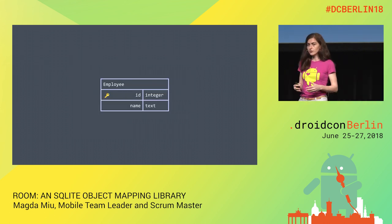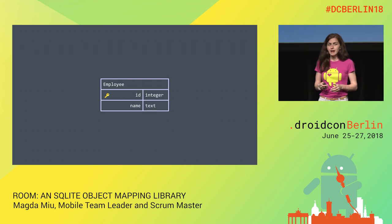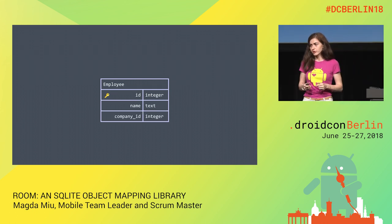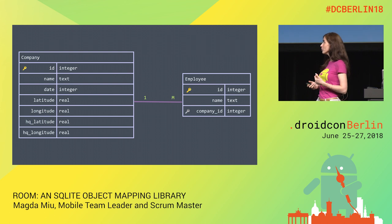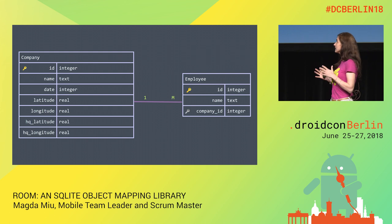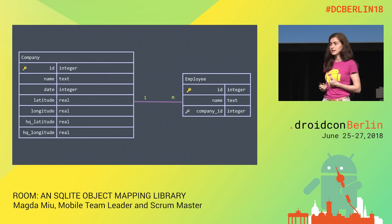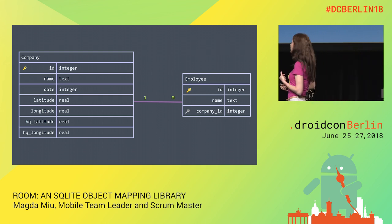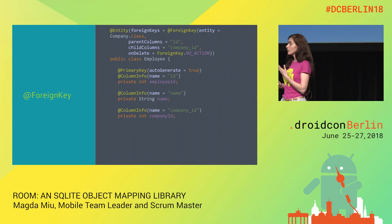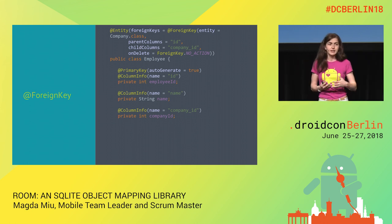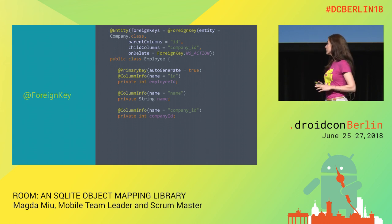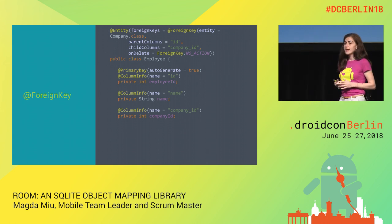Our company also has employees, which is a classic foreign key scenario. Room supports this. We have a one-to-many relation: the company ID, the primary key of the company table, becomes the foreign key of the employee table. We use the @ForeignKey annotation on the entity that contains the foreign key, specifying the parent entity, parent columns, and child columns.